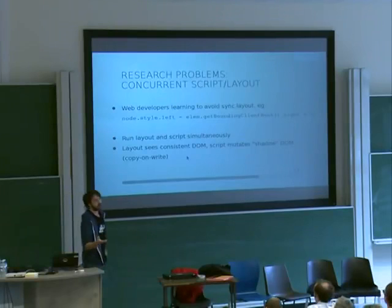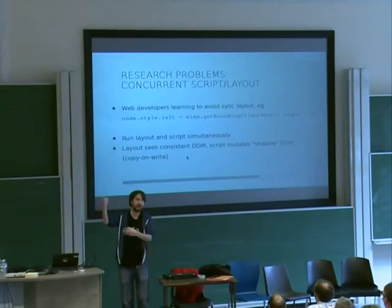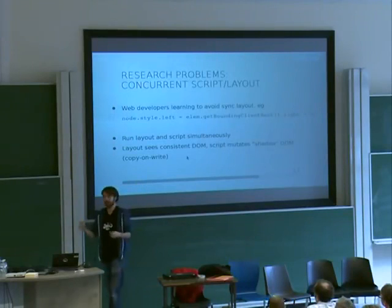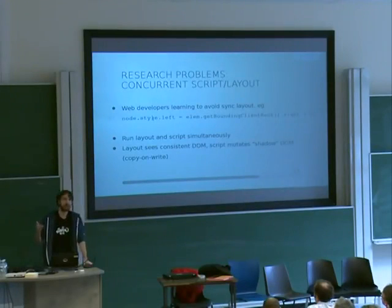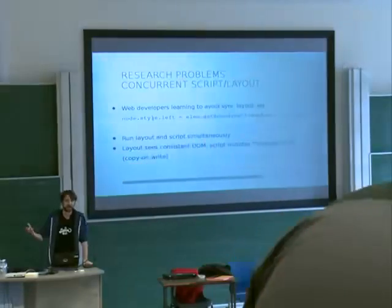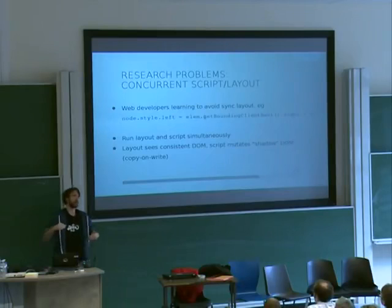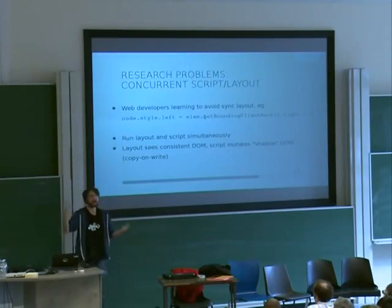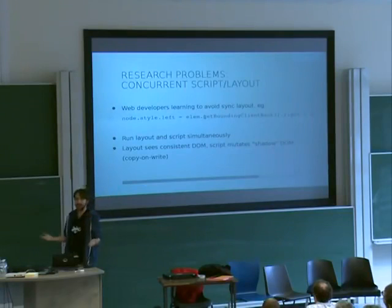Another interesting problem we're working on is concurrent script and layout. As I said, there's a loop where you're running script, it modifies the page, then you need to compute layout, then keep running script. But often that doesn't need to be synchronous. Web developers are learning that synchronous layout is a bad thing — a synchronous layout is when you make a change to layout by setting the left property of some element based on the computed value of a layout property of another element. For example, getting the bounding client rect of some other element forces a re-layout to occur. That breaks our attempt at concurrency, and there's lots of this all over the web. But web developers are starting to learn that this hurts their performance.